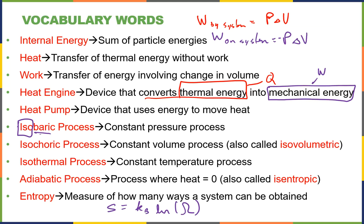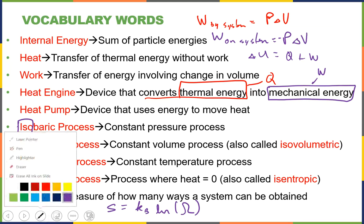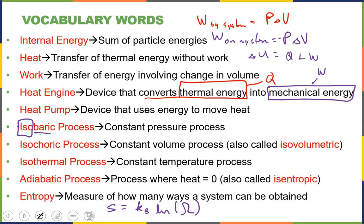That still doesn't change the First Law's meaning — energy can't be created or destroyed. But if you change the sign of work, you have to also change the sign of work in the First Law. So for that problem, the First Law of Thermodynamics is ΔU = Q + W. Most people use the convention ΔU = Q − W, where W is the work by the system.